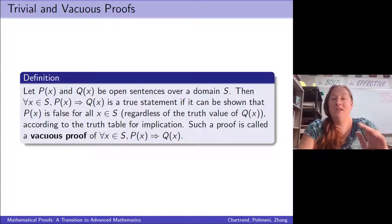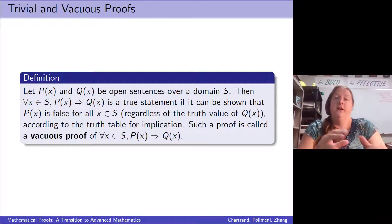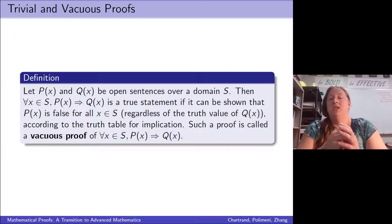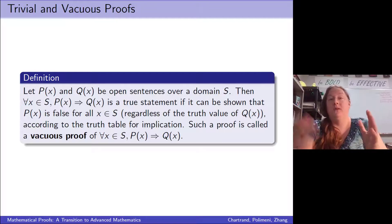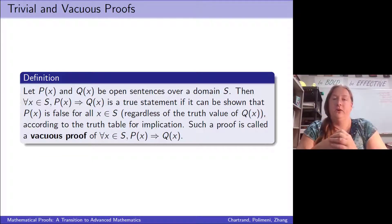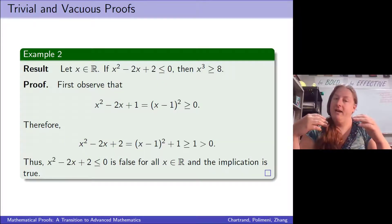The other thing that can guarantee the implication is true — where we only have to worry about the value of p — is if p is false. If p(x) is false regardless of what value I plug in for x from my domain, then we say the implication is vacuously true. Remember: false implies anything is always true. So that's what happens with a vacuous proof — we show that the hypothesis is false for all x.